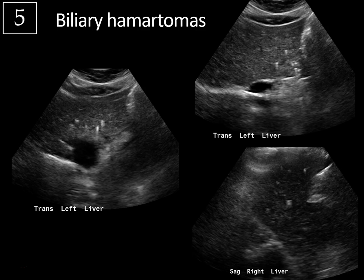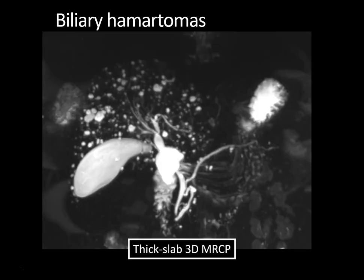These are also known as von Meyenberg complexes. On ultrasound, because the liver is filled with these little cystic areas, it can have a heterogeneous and coarse appearance to the liver echotexture, but this comet-tail appearance is fairly characteristic. An MRI will typically show these lesions with greater detail and number. You can see that the liver is just filled with these tiny little T2-bright cystic areas on this thick-slab 3D MRCP sequence. Here's the gallbladder, as well as the extrahepatic bile duct and pancreatic duct.